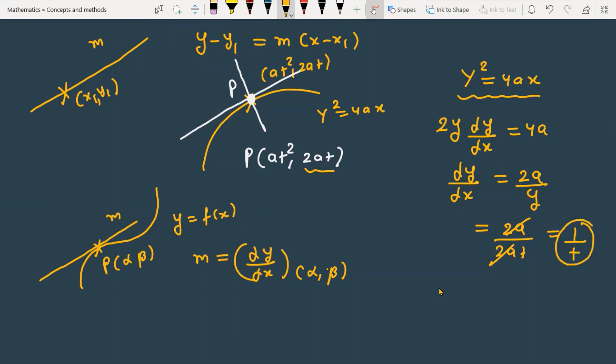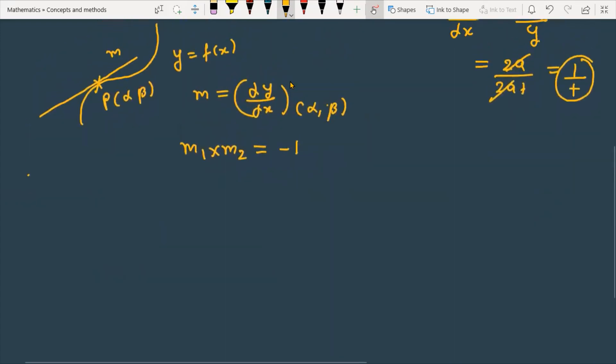Now for the normal slope, as you know, tangent and normal are always perpendicular to each other. When two lines are perpendicular, the product of their slopes equals -1. So m₁ × m₂ = -1, which gives m₂ = -t as the slope of the normal.